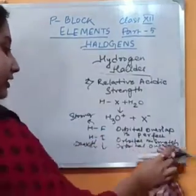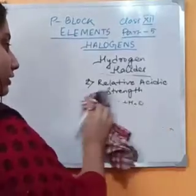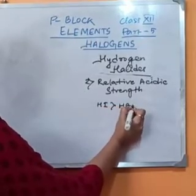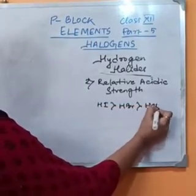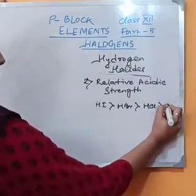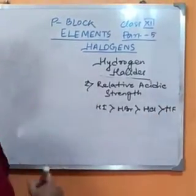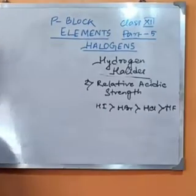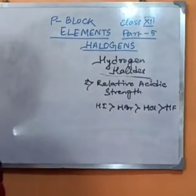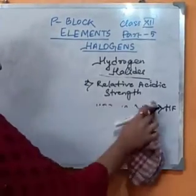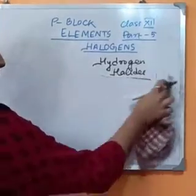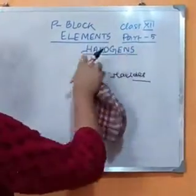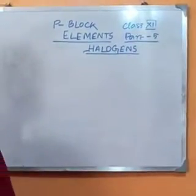H⁺ will be easily ionized for HI, whereas H⁺ will not be easily ionized for HF because of the strong HF bond. So the acidic order is just the reverse of the polarity order. The acidic strength order is: HI > HBr > HCl > HF. Next, I will come to the metal halides.